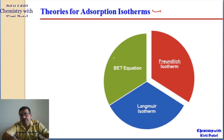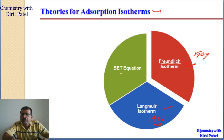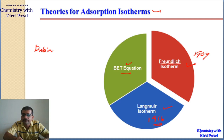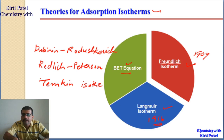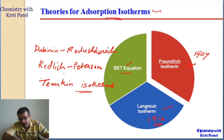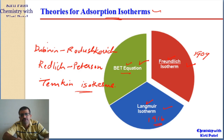There are different theories to study adsorption isotherms. The first is the Freundlich adsorption isotherm, given by Herbert Freundlich in 1909. The second is the Langmuir adsorption isotherm, given by Langmuir in 1916. For multi-molecular layers, the BET equation is followed. Other theories include the Dubinin-Radushkevich isotherm, the Redlich-Peterson theory, and the Temkin isotherm. However, in our syllabus we will study only the Freundlich, Langmuir, and BET approaches.